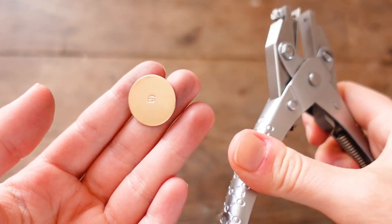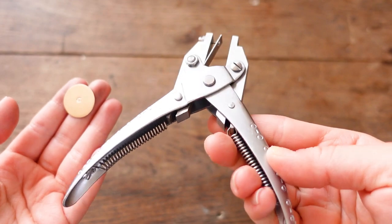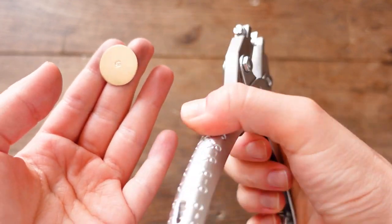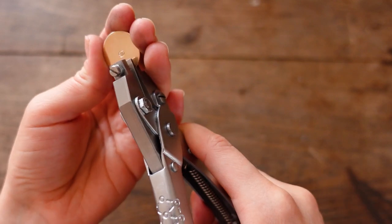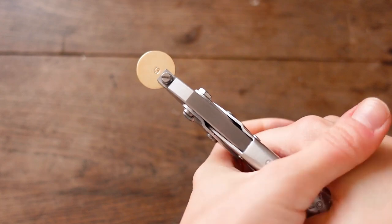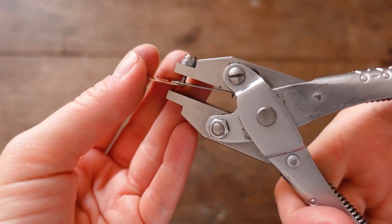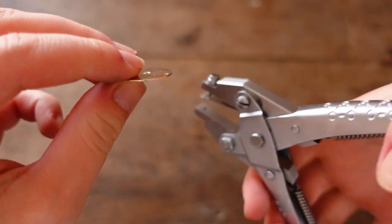Next step is to make a hole in the disc for the jump ring. You can use the drill or hole punching pliers like the ones I'm using. Luckily, since the metal sheet is quite thin here, not a lot of force is required to punch a hole.